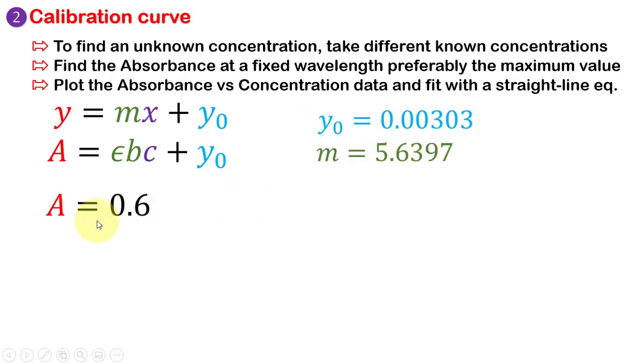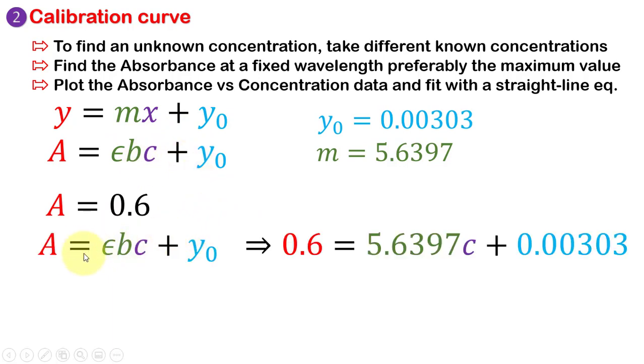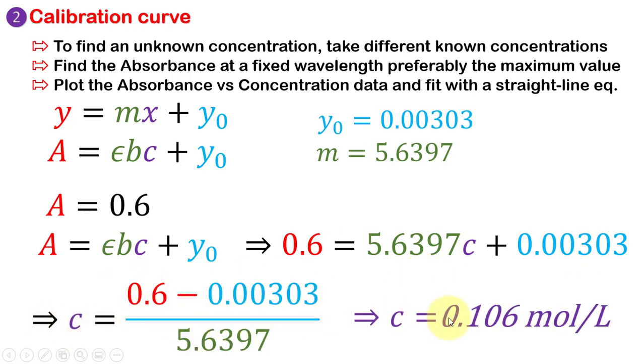Now, let's say absorbance of our unknown sample is 0.6. So, putting the acquired parameters of y-intercept, slope, and this value of absorbance in this equation, it will give the unknown concentration is 0.106 mol per liter.